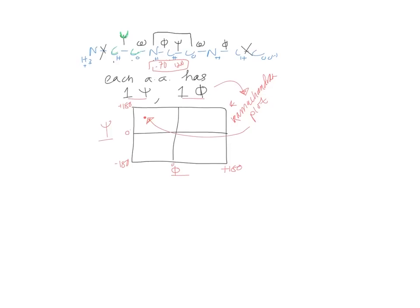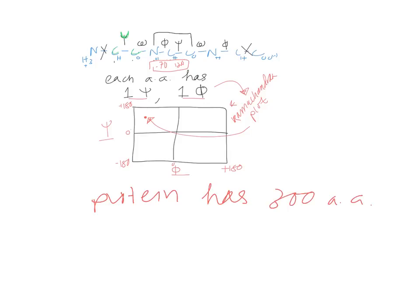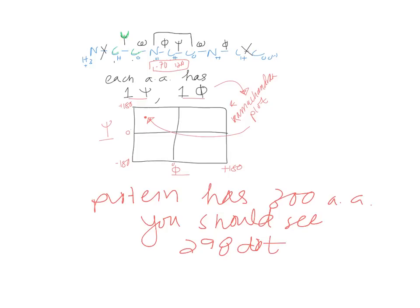If your protein has 300 amino acids, you should see 298 dots, because the amino acids connected to the N- and C-termini don't count — that's just minus two. You would see a ton of dots all over this plot. There are certain regions that are allowed and certain regions that are disallowed, but the number of dots should equal the number of amino acids in the primary sequence, minus two.